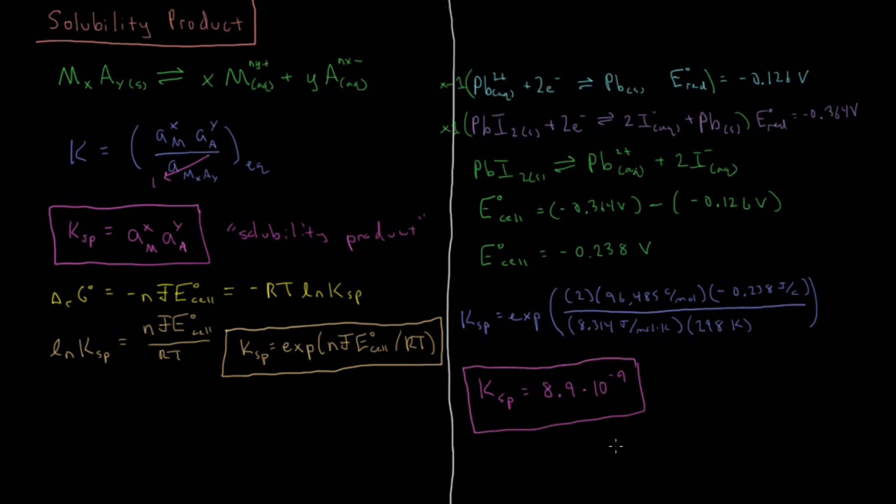So that equilibrium constant, that solubility product indicates that this reaction is unfavorable, so it does favor the lead iodide solid by quite a lot, but there will be some slight solubility in aqueous solution, and this will give us a concentration for each of these ions in solution which is in the low millimolar range. So the Gibbs energy of this reaction is positive, but there is some slight amount of lead iodide which would be soluble in aqueous solution.